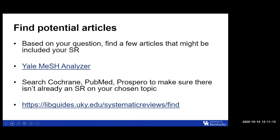The next step is to find potential articles. You'll need to do a scoping search to find a few studies that would be included in your systematic review, to get an idea of your topic and whether articles are available. You can use those articles to harvest search terms for your systematic review. Once you've found articles that are really good candidates for inclusion, you need to make sure your final search strategy includes them. The Yale MeSH analyzer will help you develop your search terms by pulling all the MeSH terms found in those articles.